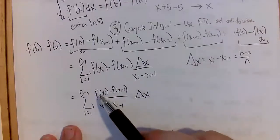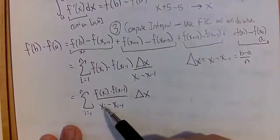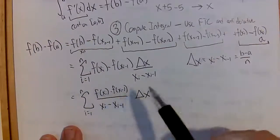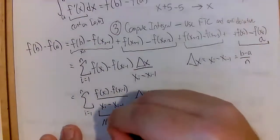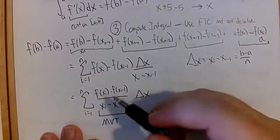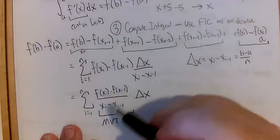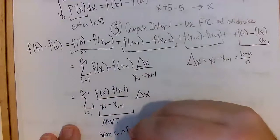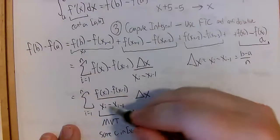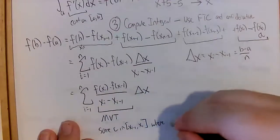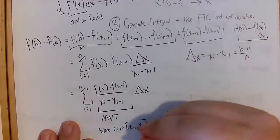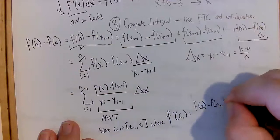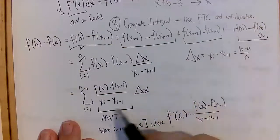Now what is this expression? We have f of a number minus f of a different number over that number minus the other x value — we've seen this before in the Mean Value Theorem (MVT). The MVT says that if we have a difference quotient like this over the same x values, there must be some c_i in the interval (x_{i-1}, x_i) where f prime of c_i equals f of x_i minus f of x_{i-1} over x_i minus x_{i-1}, which is exactly what we have.